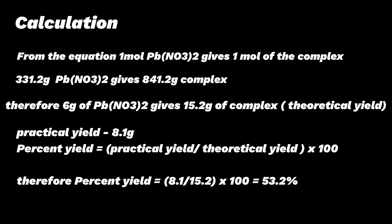Therefore 6 g of lead(II) nitrate will give 15.2 g of the complex. This is the theoretical yield which we obtained from the equation. The practical yield is the yield which we got after the experiment which was 8.1 g. So the percent yield is practical yield divided by theoretical yield times 100 and therefore it is 53.2 percent yield.